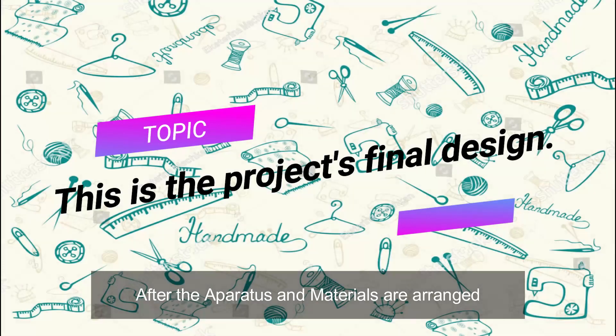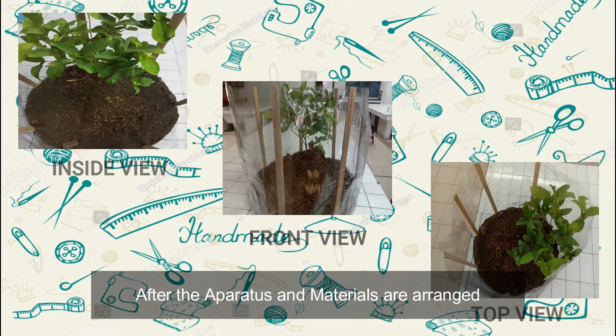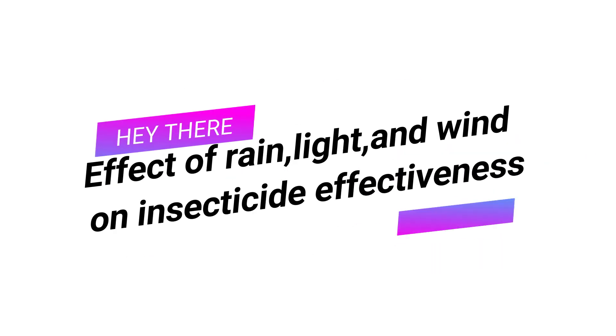After the apparatus and materials are arranged, this is the experiment kit that will be used. Let's get to the main activity, starting from Experiment 1, with the title: Effect of Rain, Light, and Wind on Insecticide Effectiveness.